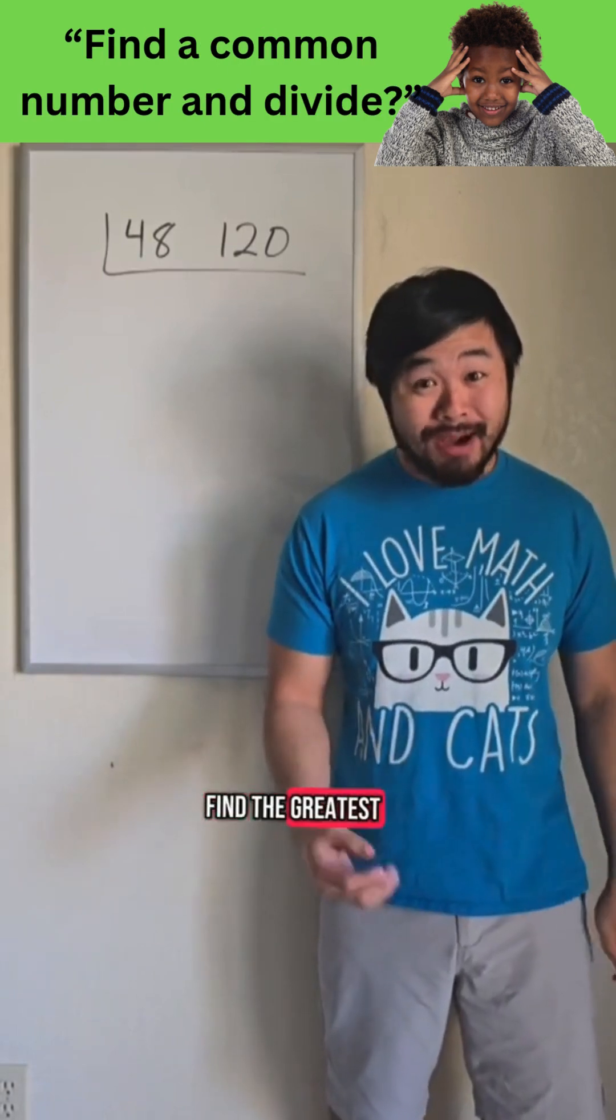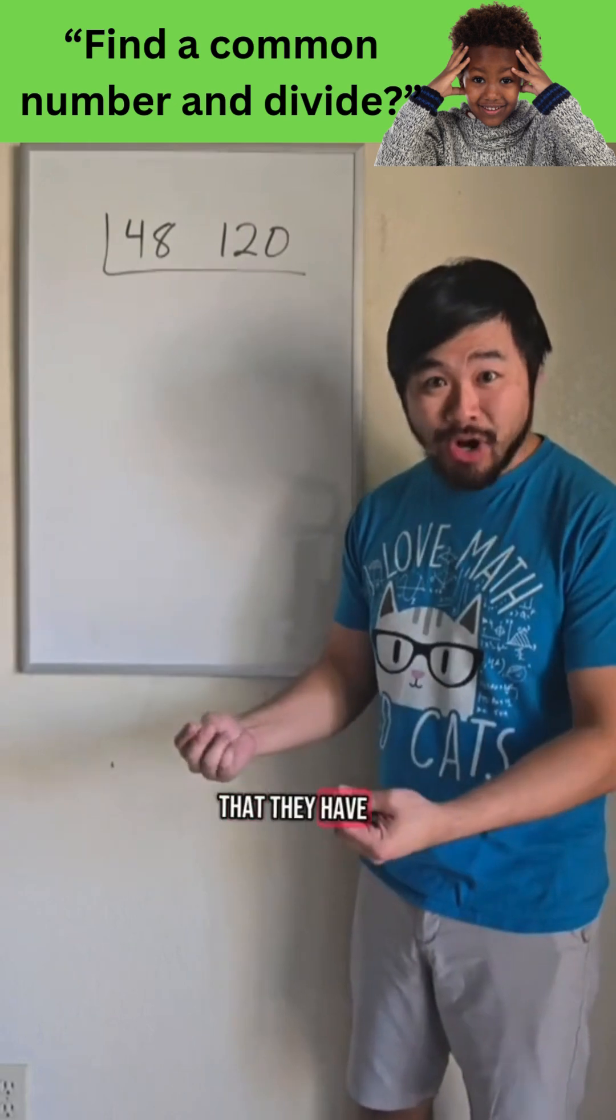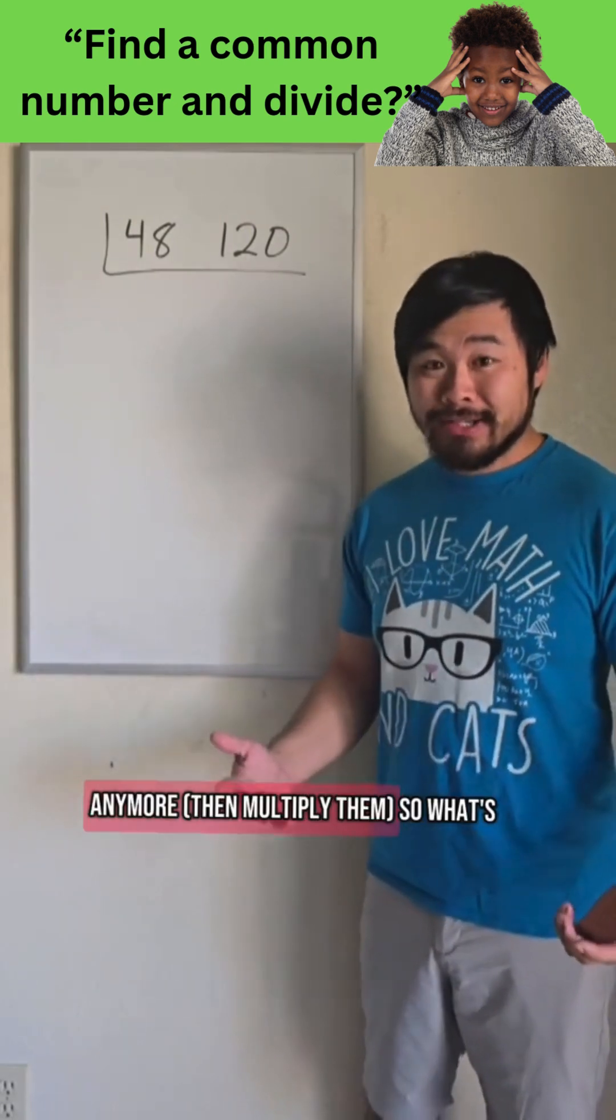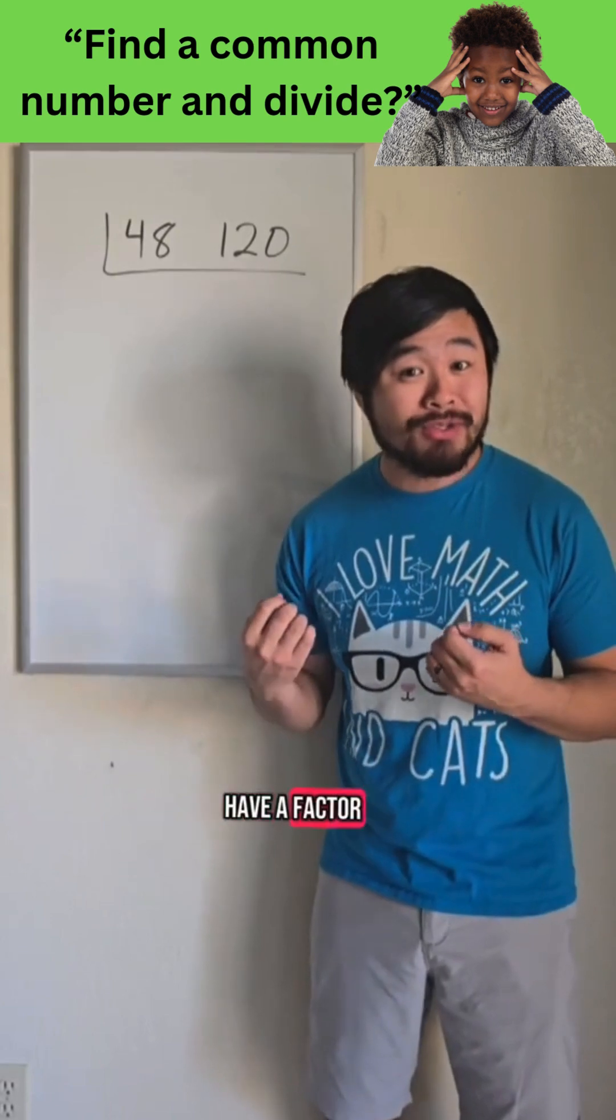So say that we're trying to find the greatest common factor of 48 and 120. What we do is we factor out factors that they have in common until we can't anymore. So what's a good start? Let's say someone says that they know that they have a factor of 12 in common.